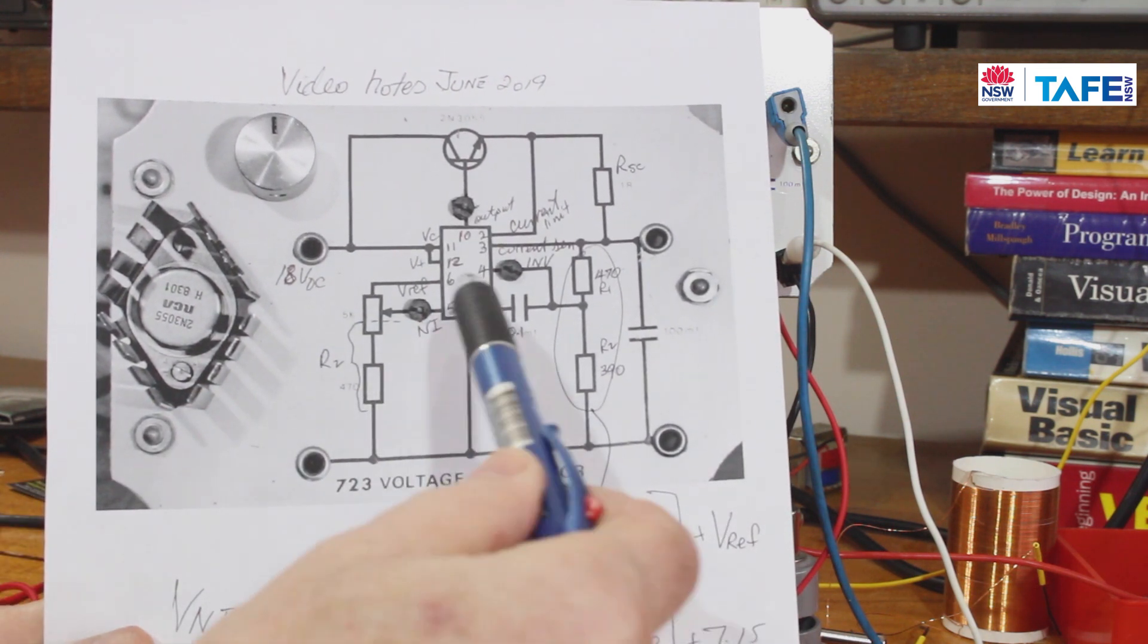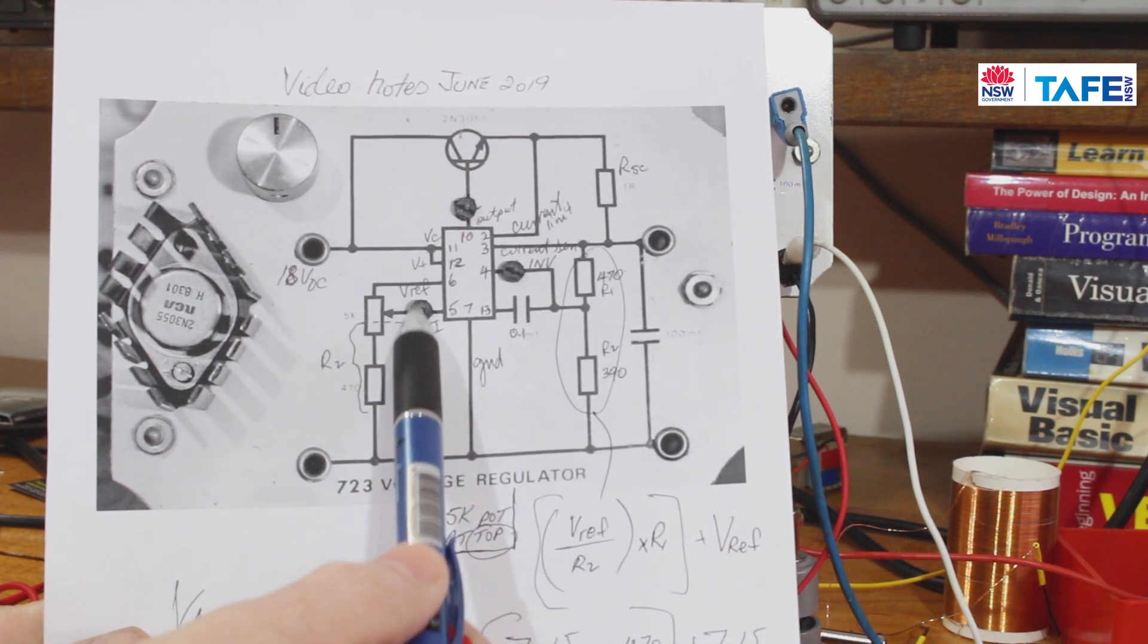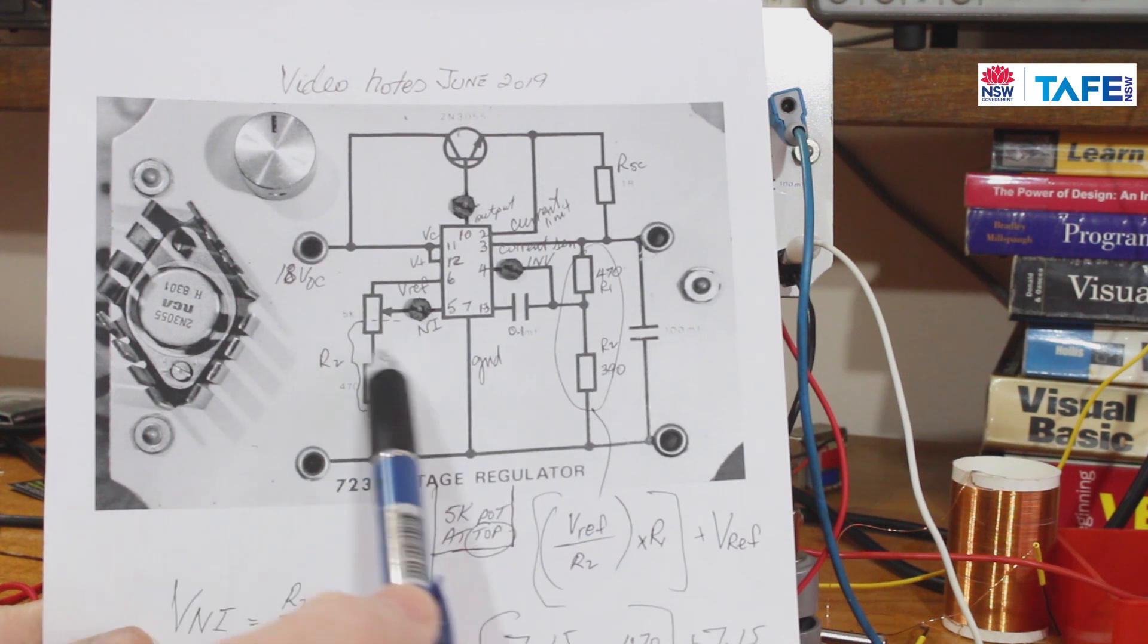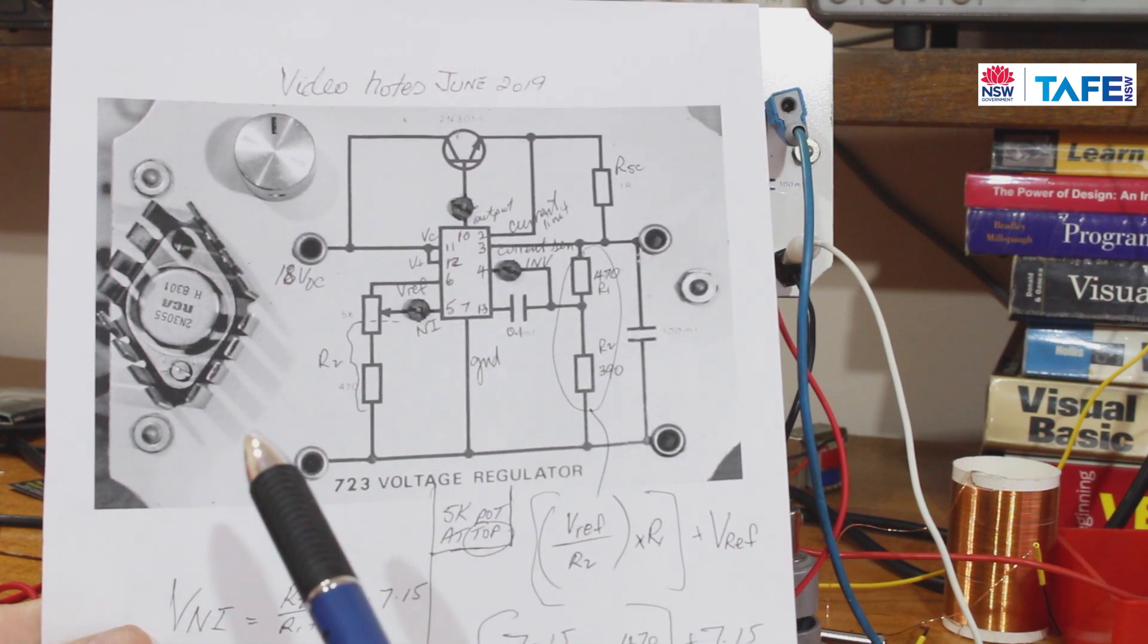Quite often it's drawn this way because by convention we like to put the voltage reference components on the left-hand side and the output voltage divider on the right-hand side.